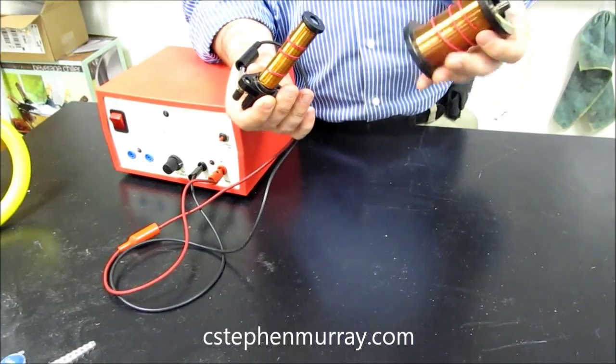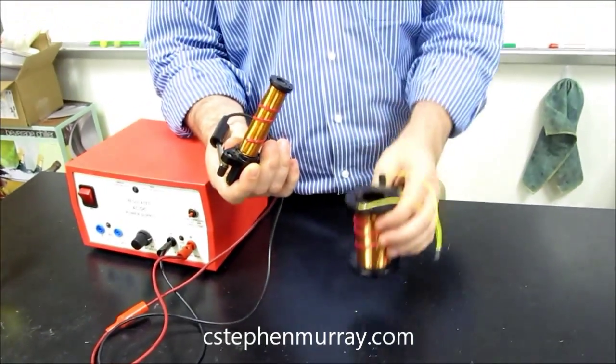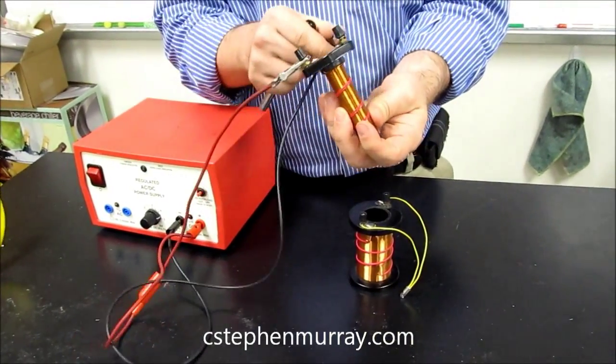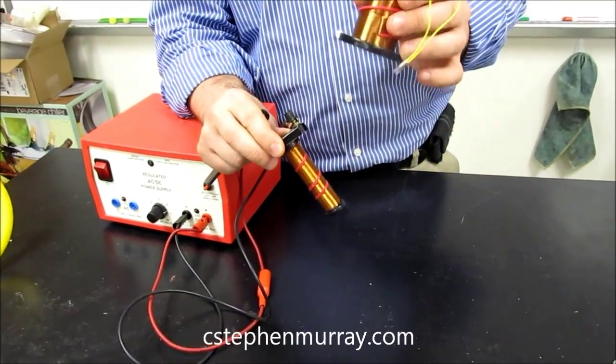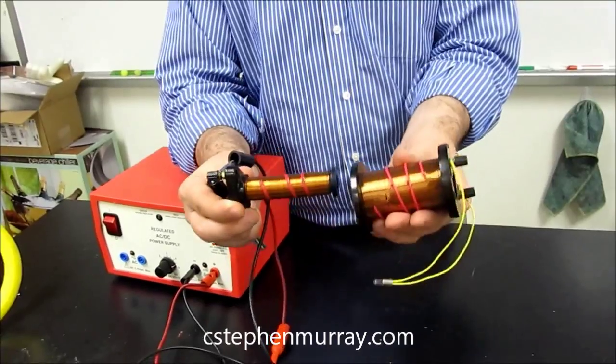Here we go. This is a transformer just to show in the classroom. It has, since I'm putting current in here, this becomes the primary. Since current will be coming out of here, this will be the secondary. Notice again,